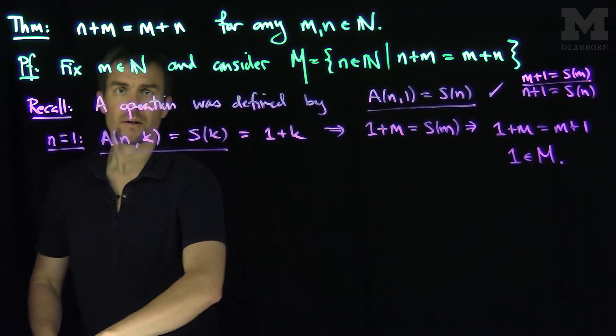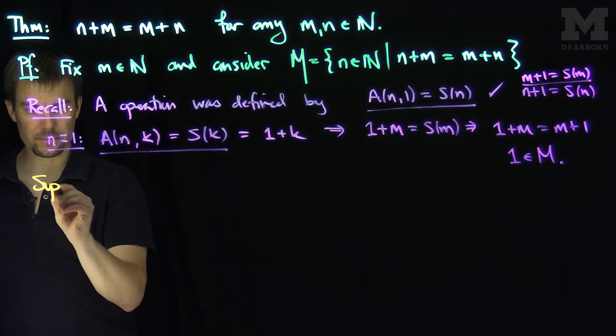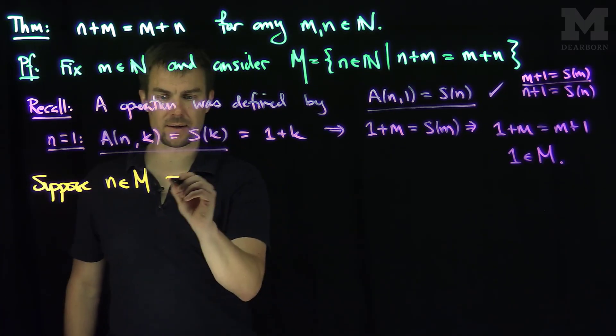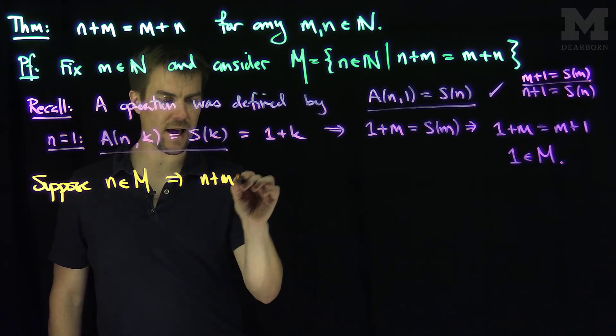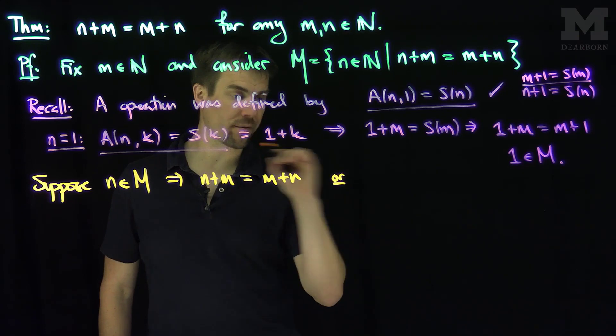The second property: now let's suppose that n is in M. So suppose that n is in M. And so what does that tell us? That tells us that n plus m is equal to m plus n.